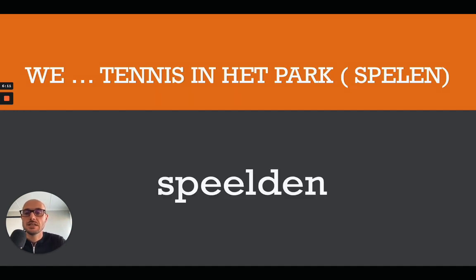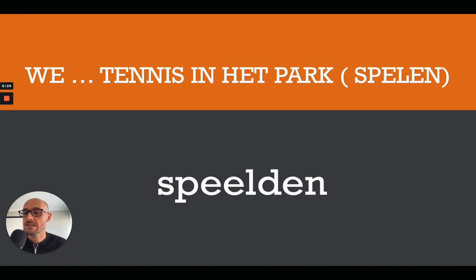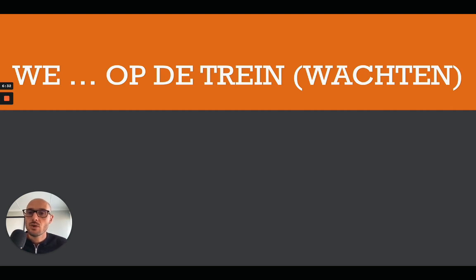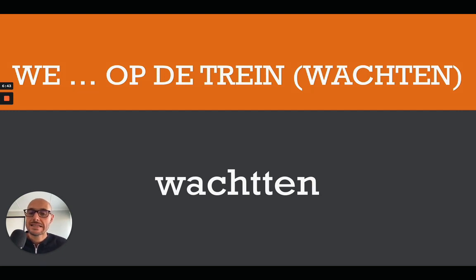Next: wij [blank] tennis in het park, and the verb is spelen. The correct answer is wij speelden tennis in het park — completely regular. The base of the verb ends in l, which is not part of 't kofschip, so we add -de. Since it's plural we add -den. Next: wij [blank] op de trein, and the verb is wachten.